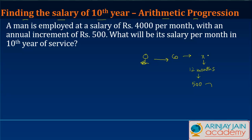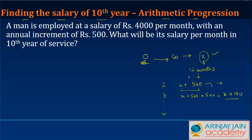So if the salary is X in the first year, after 12 months — that is, in the second year — the salary will be X plus 500. In the third year, it will be 500 more than year 2, or X plus 1000, and so on. We say the person has joined with a salary of X and an annual increment of 500 rupees.